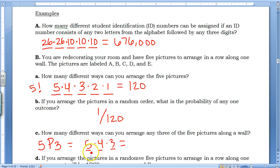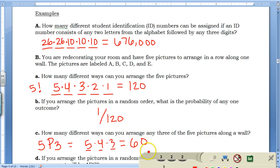Again, because once we place a picture, we have less to choose from. 5 times 4 times 3. I think I did that one above. So there are 60 different ways to arrange those three pictures on the wall.